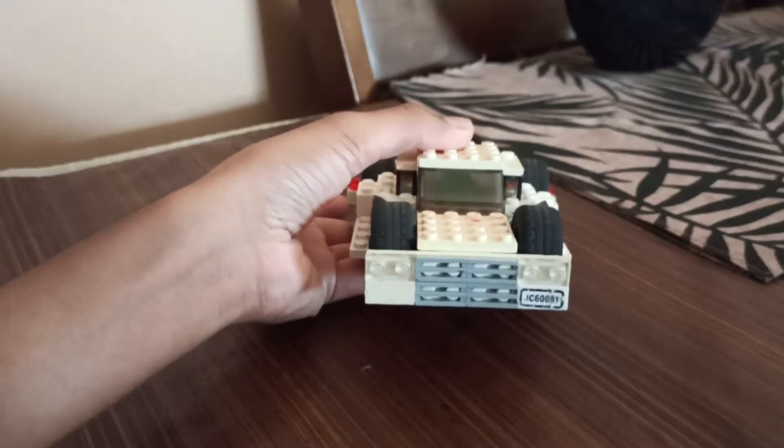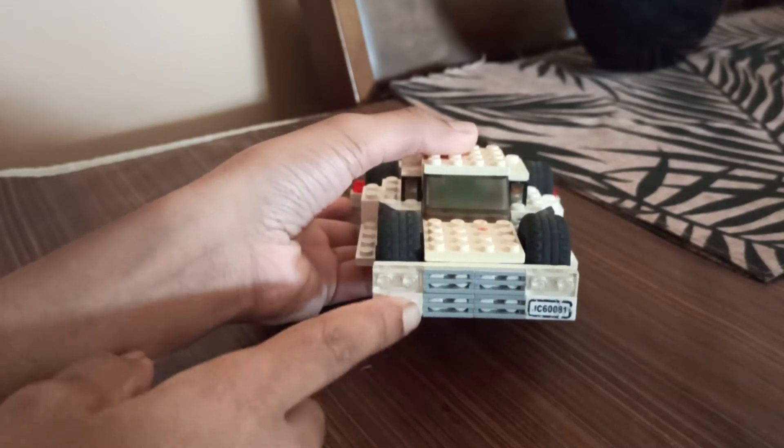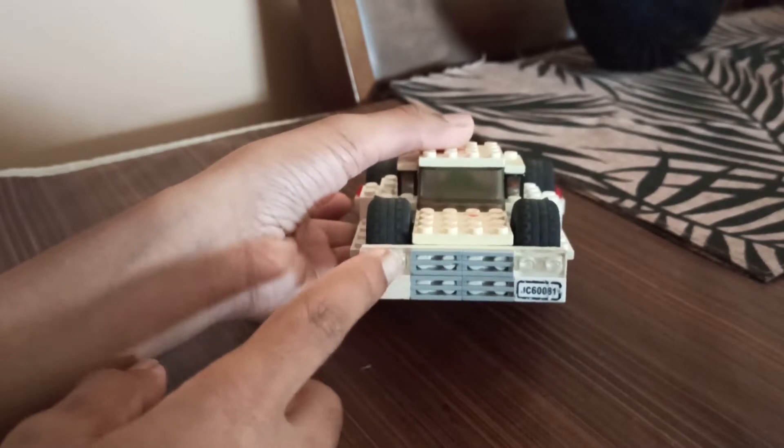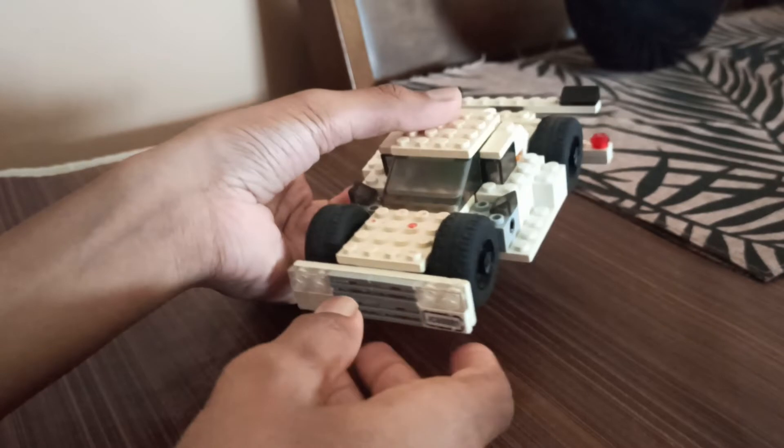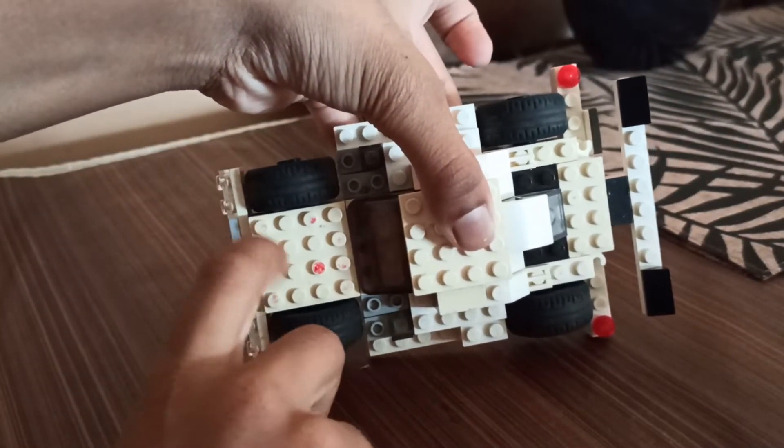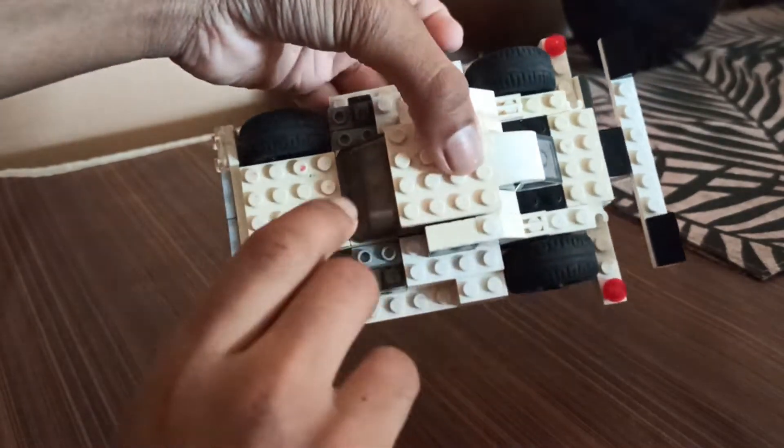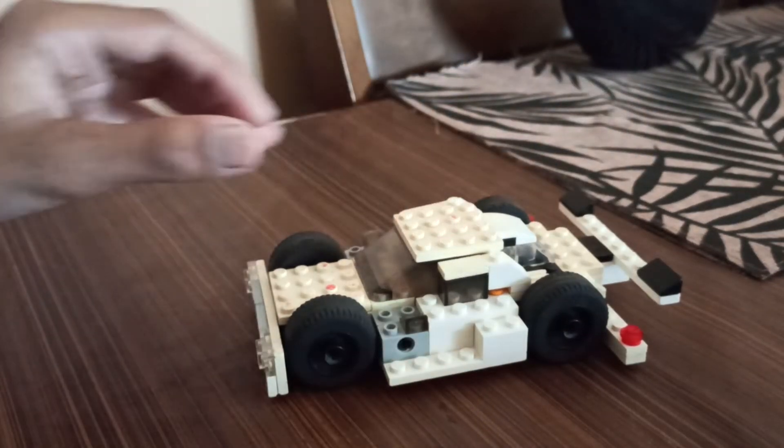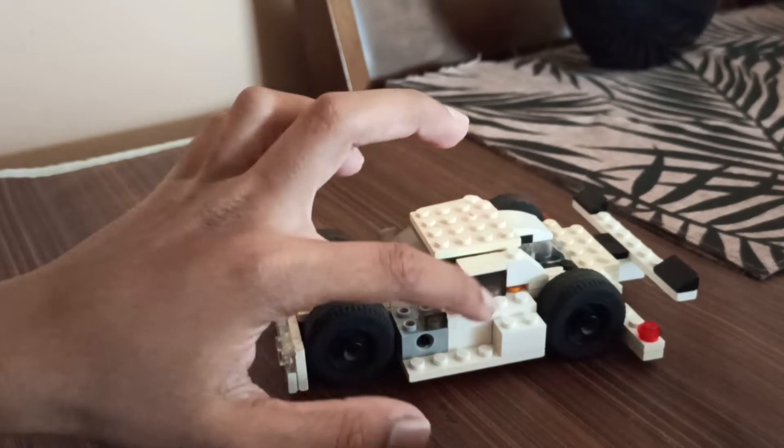It has a bumper with grill, number plate, and front lights. As you can see from the top view, the front wheels are closer together than the back wheels, so the car becomes wide.